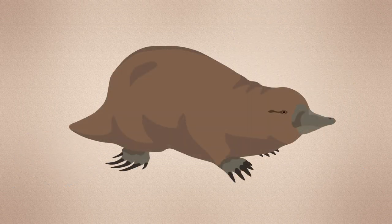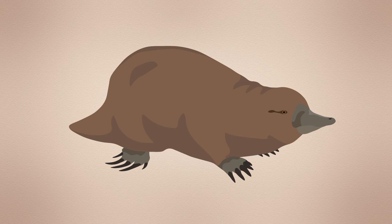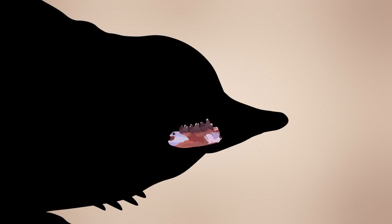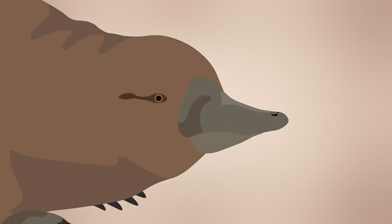Whilst Steropodon presents a form far more similar in size to today's echidnas, it is notably still-toothed. As we move closer to the present, the idea that all echidnas did from this point on was lose their teeth is completely turned on its head.